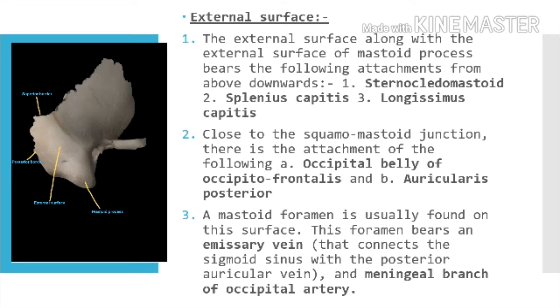Close to the squamomastoid junction, there is the attachment of the following two muscles: number 1, the occipital belly of occipitofrontalis; and number 2, the auricularis posterior. A mastoid foramen is usually found on this surface.